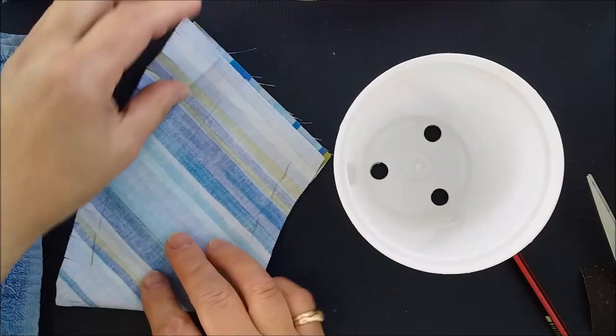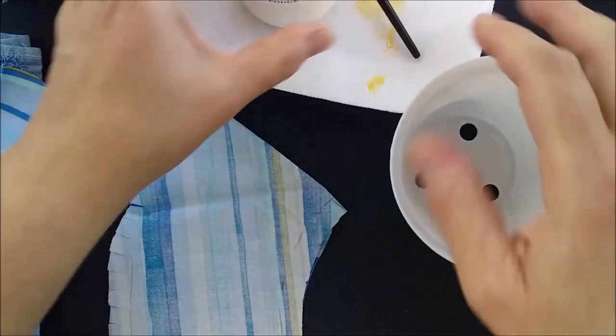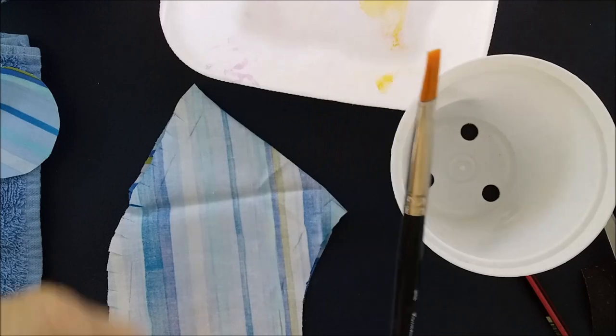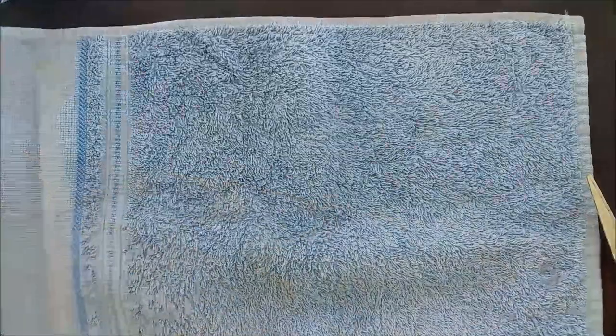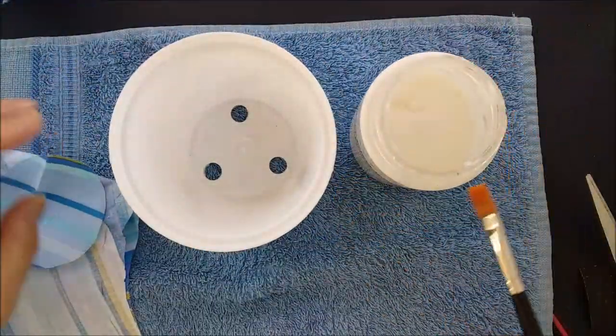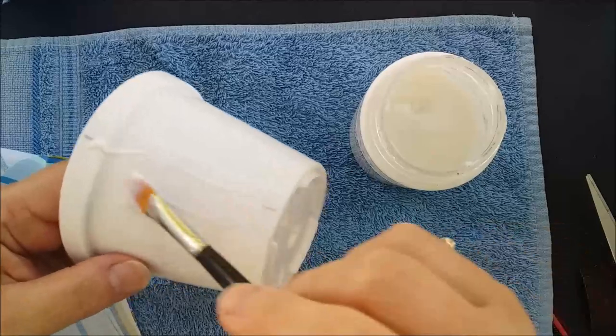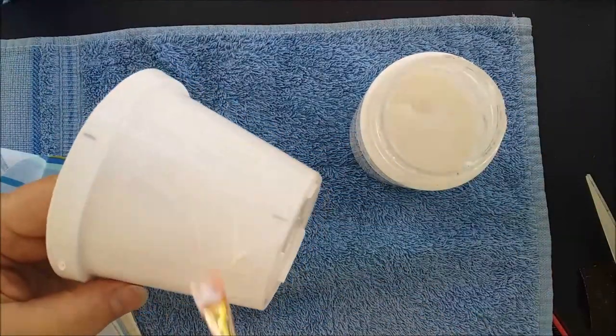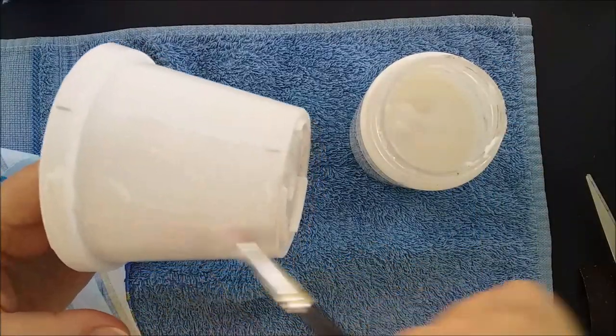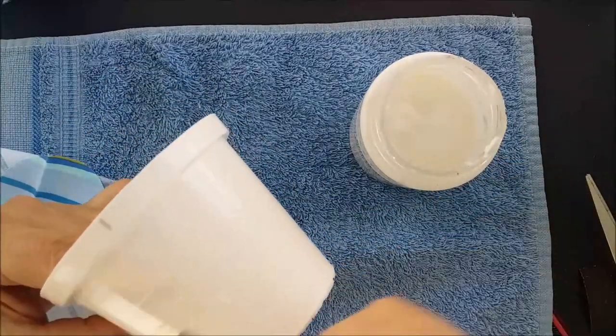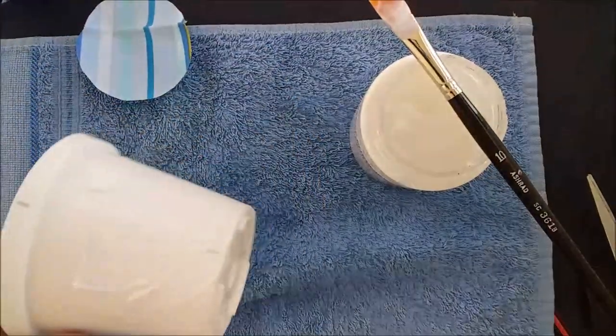Then fold your fabric in half and it is ideal to start in the center and glue outwards from both sides because otherwise you'll find that sometimes it's easy to get yourself in a muddle. So the glue that I'm going to be using to stick this all down with is podge and I'm sure that most of you will have podge that you have from your decoupage days.